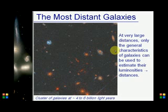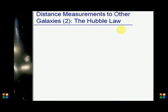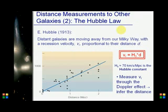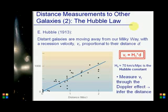At very large distances, only the general characteristics of galaxies can be used to estimate luminosities and therefore distances. Using Hubble's constant and Hubble's Law, we can get the distance of a galaxy, because distant galaxies are moving away from our Milky Way with recession speeds — radial velocity — proportional to distance.